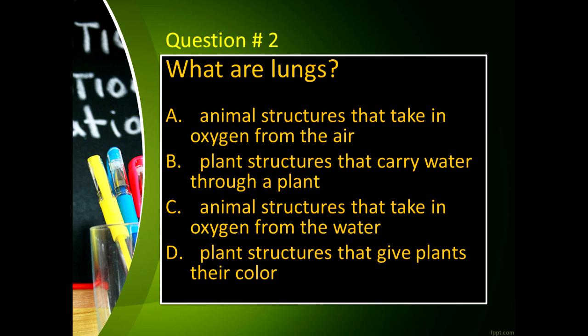What are gills? Letter A, animal structures that take in oxygen from the air. Letter B, plant structures that carry water through a plant. Letter C, animal structures that take in oxygen from the water. And letter D, plant structures that keep plants upright.